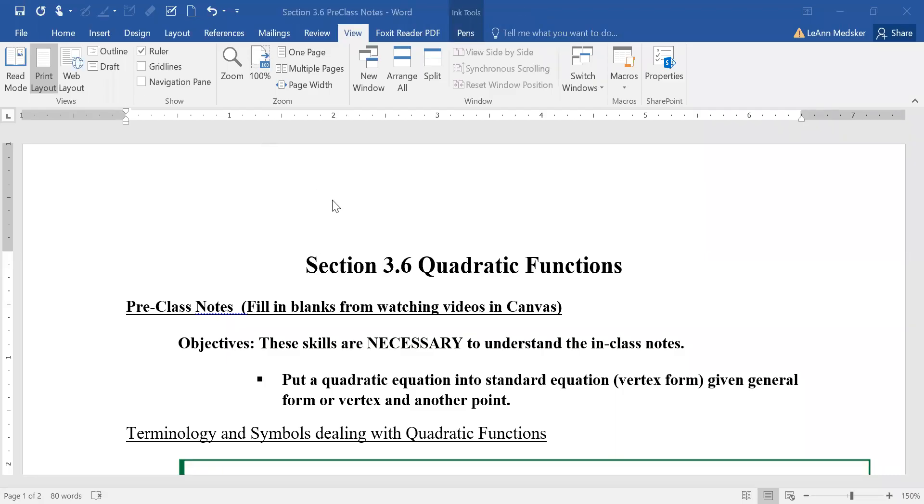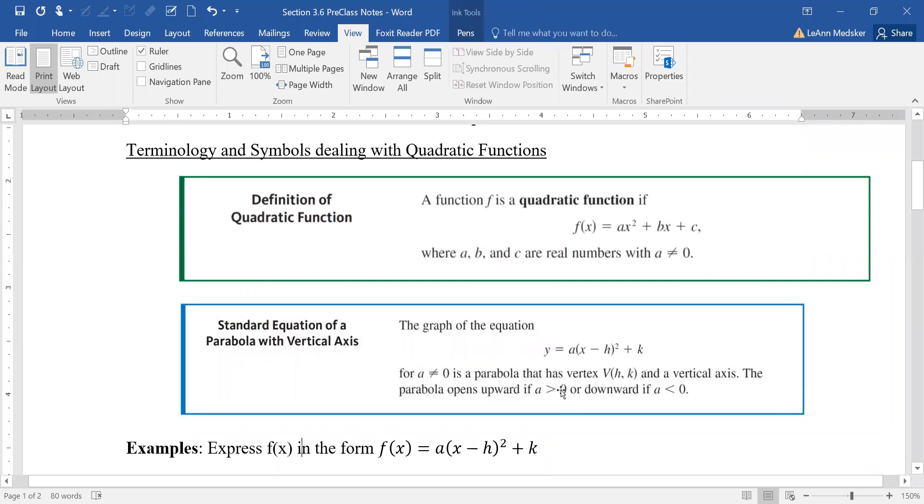Alright, this is the pre-video for section 3.6 on quadratic functions. The skill we're going to review is to put a quadratic equation into standard equation, which is also known as vertex form, given the general form or possibly being given a vertex and a second point on your quadratic. We need to make sure we understand the definitions of general, standard, and all of those different things.